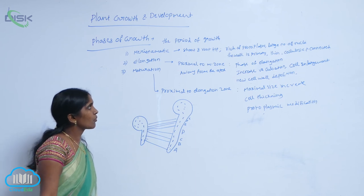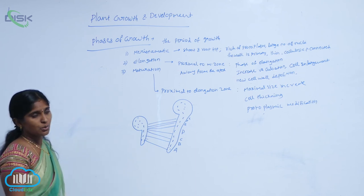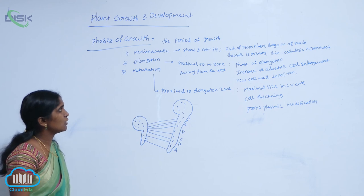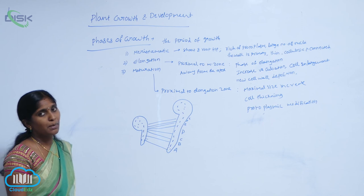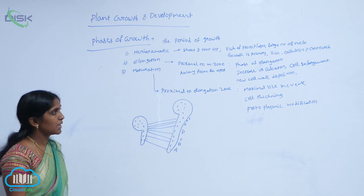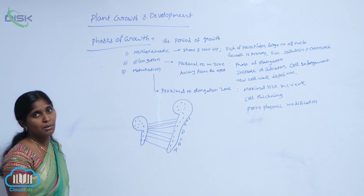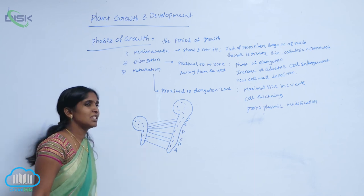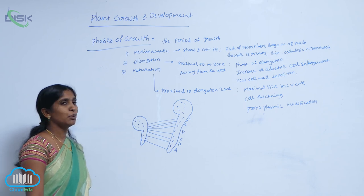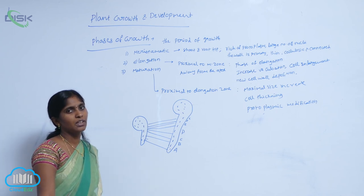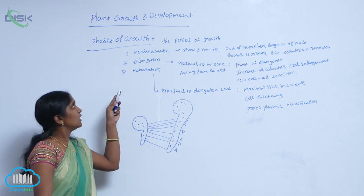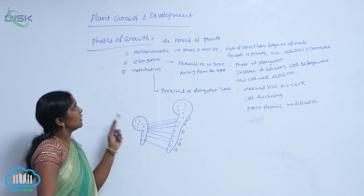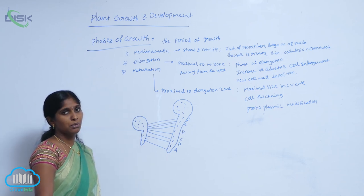In front of the elongation zone, there is another zone called the maturation zone, proximal to the elongation zone. Here, the cells are maximum in size — maximum size increment. The cell walls are thickening, and protoplasm modifications also occur in this zone. The period of growth is thus divided into meristematic, elongation, and maturation zones.